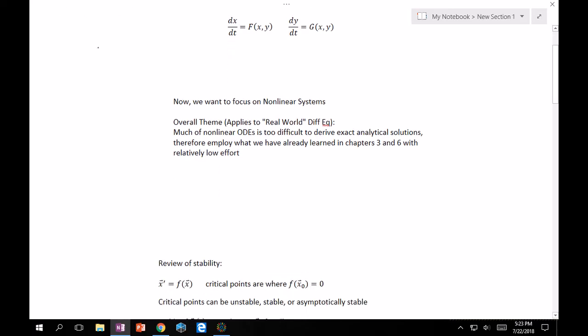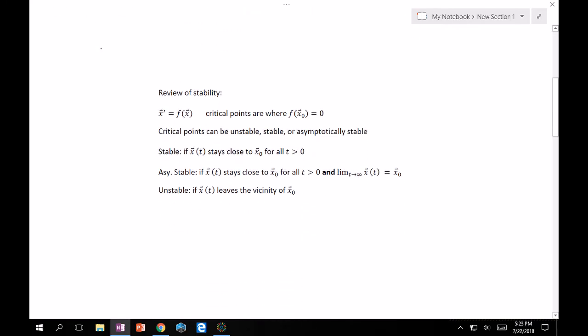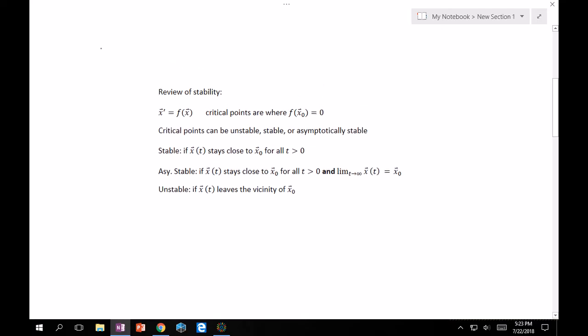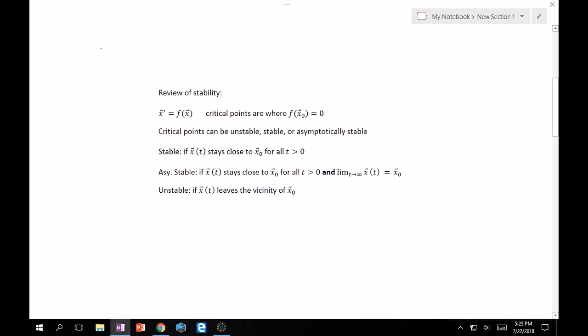Before that, let's review stability. For stability, instead of just having numbers we have systems, right? So vector x prime equals f of x. Critical points are clearly where f of some critical point x naught equals zero. Just as before, critical points can either be unstable, stable, or asymptotically stable.